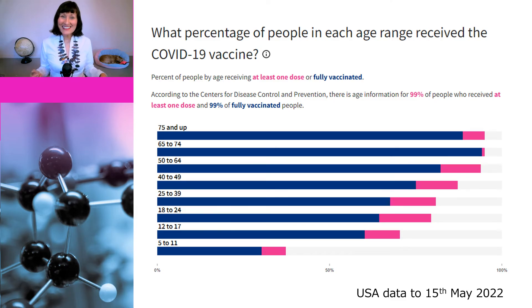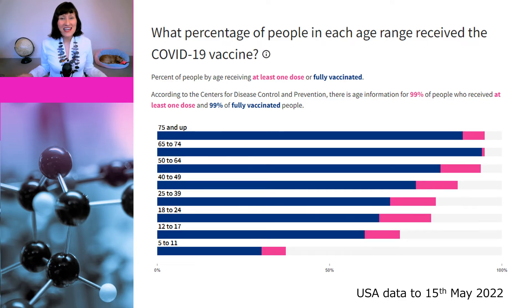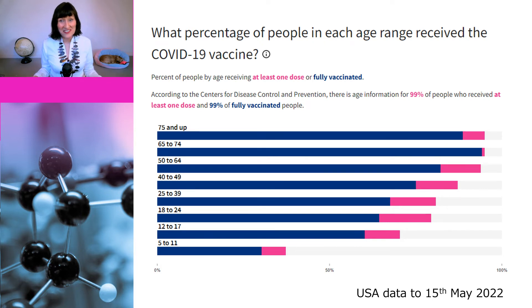So what's that got to do with the number of people being hospitalised or dying from COVID? As most people know, your risk of being hospitalised or dying from COVID increases with age. And it just so happens that a higher proportion of older people are vaccinated than younger people. These are the figures here for the USA, but we see the same thing in most countries. So basically the age groups most likely to be hospitalised or die from COVID are the age groups most likely to be vaccinated.